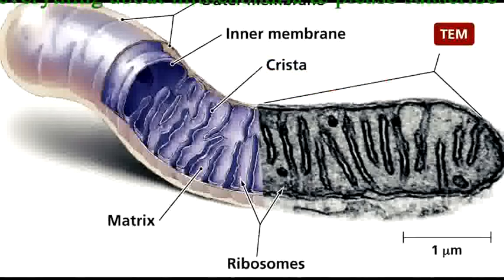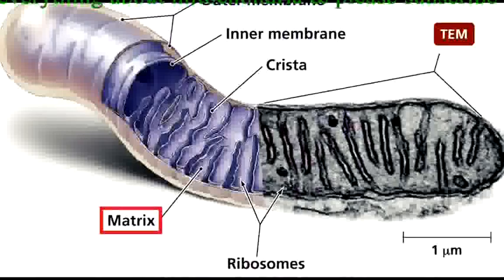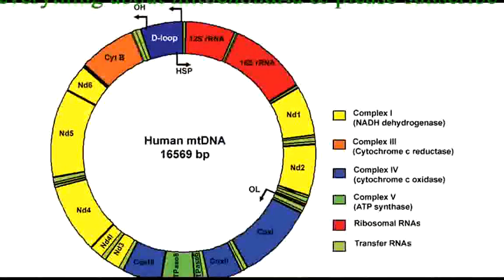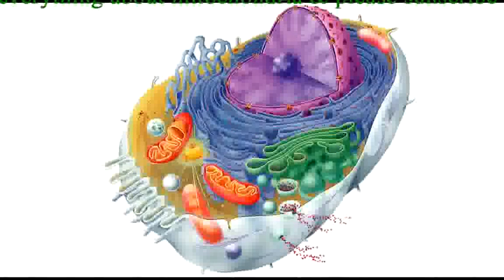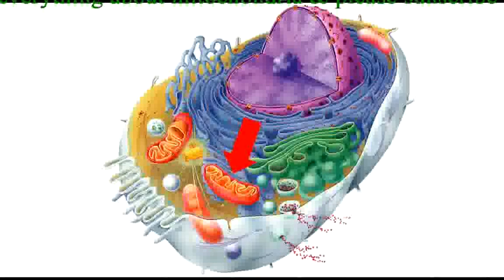Inside the inner membrane is the matrix, where the citric acid cycle occurs. Ribosomes are found throughout the matrix because mitochondria have their own DNA and can assemble their own proteins. However, most mitochondrial proteins are synthesized by the cell and transported into the mitochondrion through the membrane pores.